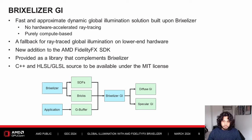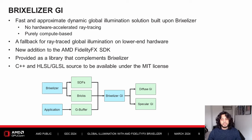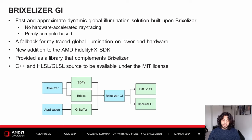All the C++ and shader source will be available under the MIT license. The high-level idea of Brixelizer GI is that it takes in the output resources of Brixelizer as well as the G-buffer from the application and provides diffuse and specular GI outputs that you can composite into your final shading output.